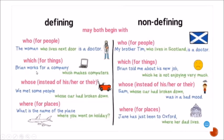'Which' is the relative pronoun we use for things. Defining example: 'Brian works for a company which makes computers' — we need to identify what kind of company we are talking about. Non-defining example: 'Brian told me about his new job, which he is not enjoying very much' — this gives extra information.